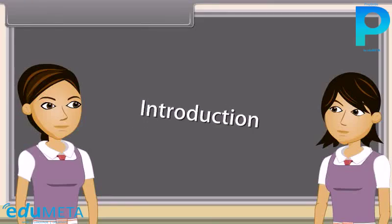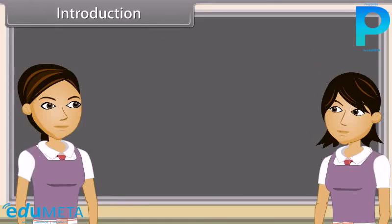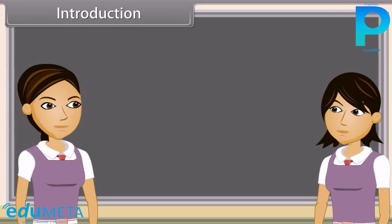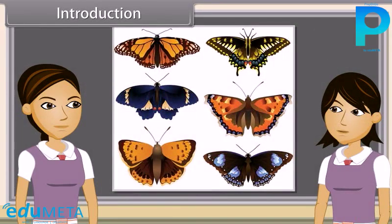Evolution is any change across successive generations in the heritable characteristics of biological populations. Variations are the structural, functional or behavioral changes from the normal characters developed in the living organisms.